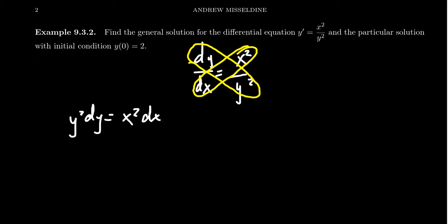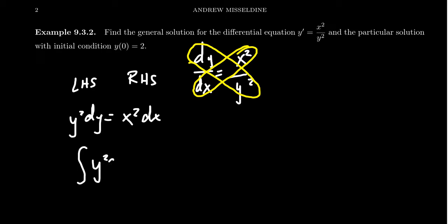The equations have been separated. The left-hand side only consists of the variable y, including the differential dy — don't forget about that. And the right-hand side only consists of the variable x, including the differential dx. Once you've separated the variables, integrate both sides: the left-hand side with respect to y, and the right-hand side with respect to x.